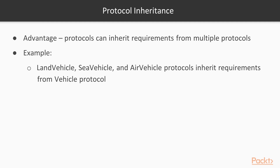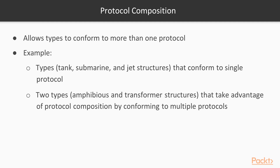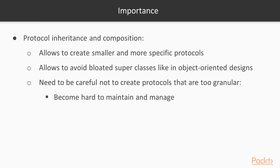It is also important to note that with a combination of protocol extensions and protocols, we do have the ability to inherit functionality. Protocol Composition allows types to conform to more than one protocol. In our example, there are some types — Tank, Submarine, and Jet structures — that conform to a single protocol. However, there are also two types, Amphibious and Transformer structures, that take advantage of protocol composition by conforming to multiple protocols.